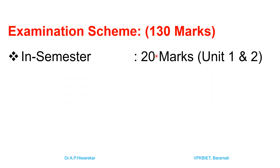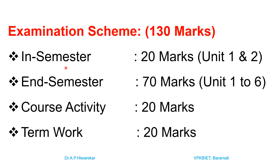The examination scheme for this paper is for 130 marks with four components: in-semester examination, end-semester examination, course activity, and term work. The in-semester examination is for 20 marks based on units 1 and 2. The end-semester examination is for 70 marks covering units 1 to 6. Course activity is for 20 marks and term work is for 20 marks. Details of the examination pattern will be discussed further during classes.